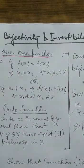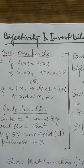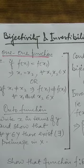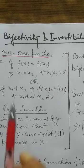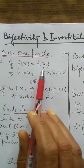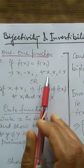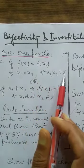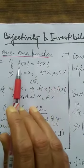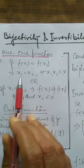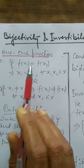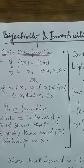A one-one function means distinct elements of set X must have distinct images in set Y. That is, if f(x1) equals f(x2) for all x1, x2 belonging to set X, and if this assumption implies x1 is equal to x2, then the given function will be called a one-one function.